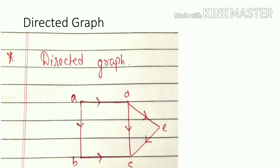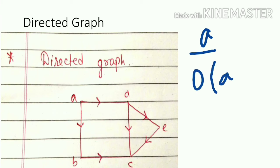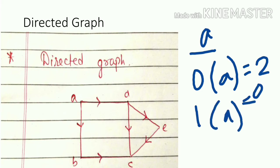Now, degree of vertex for the directed graph. In a directed graph, some edges are outgoing and some are incoming. For vertex A, there are two outgoing edges and zero incoming edges, so the out-degree is 2 and the in-degree is 0.